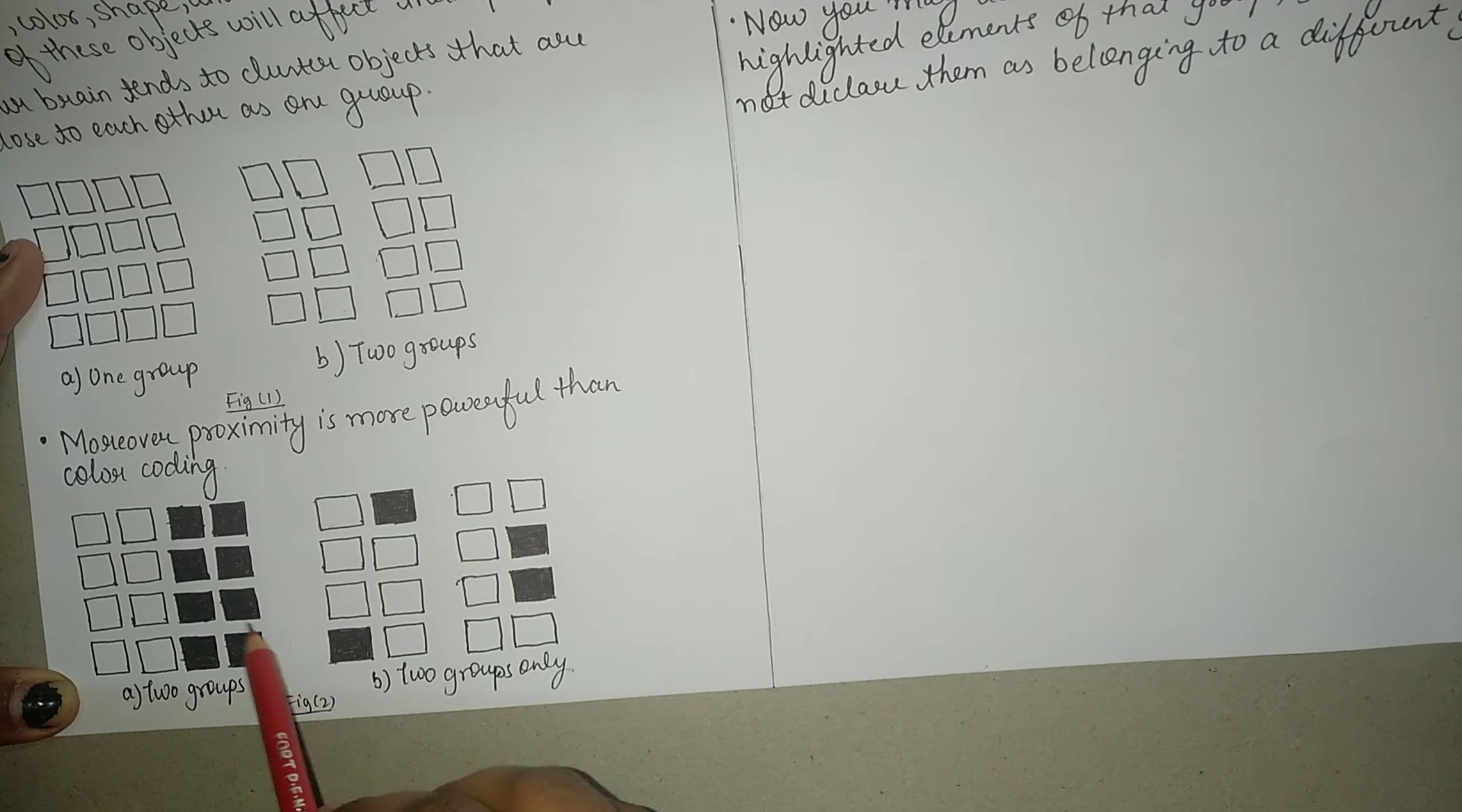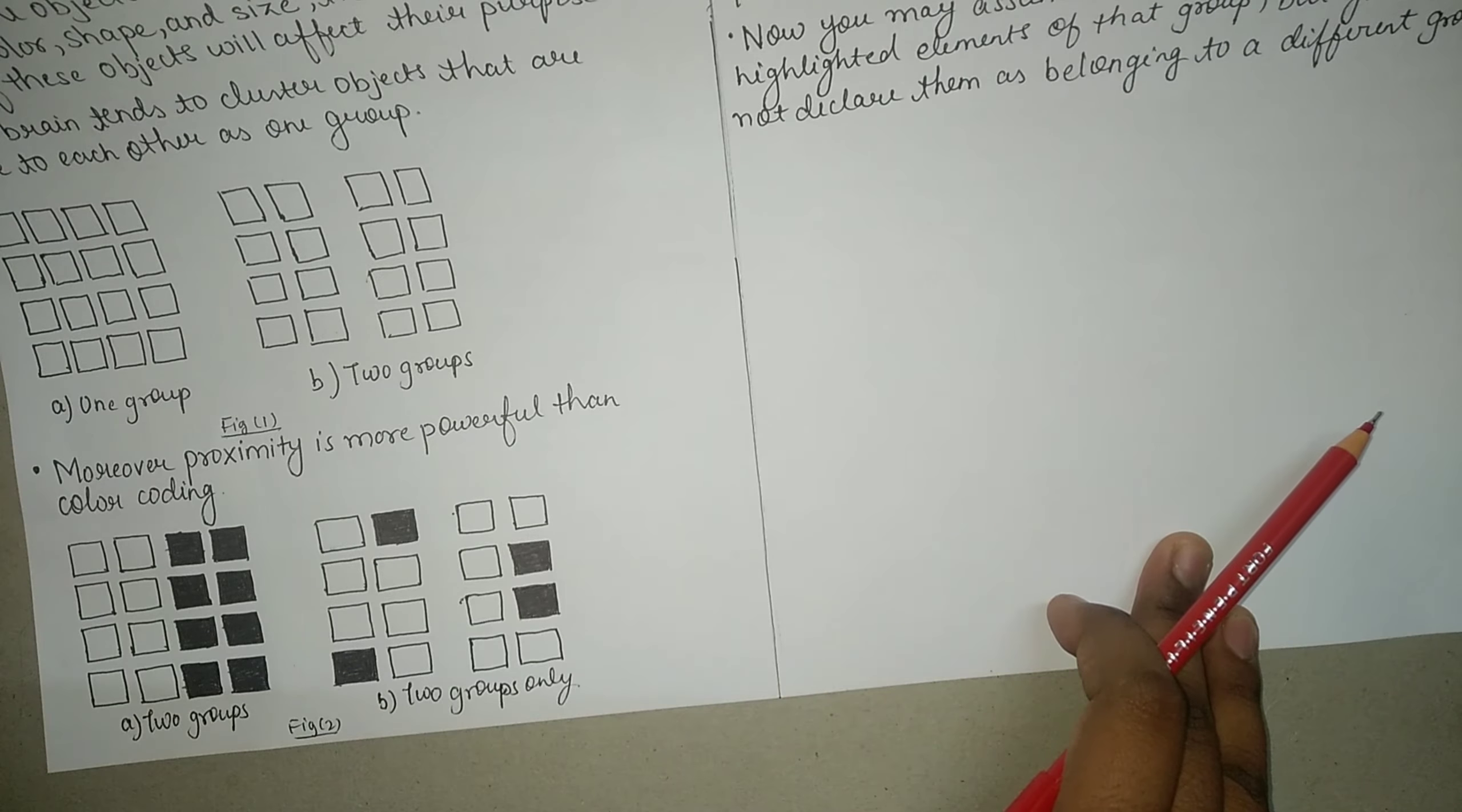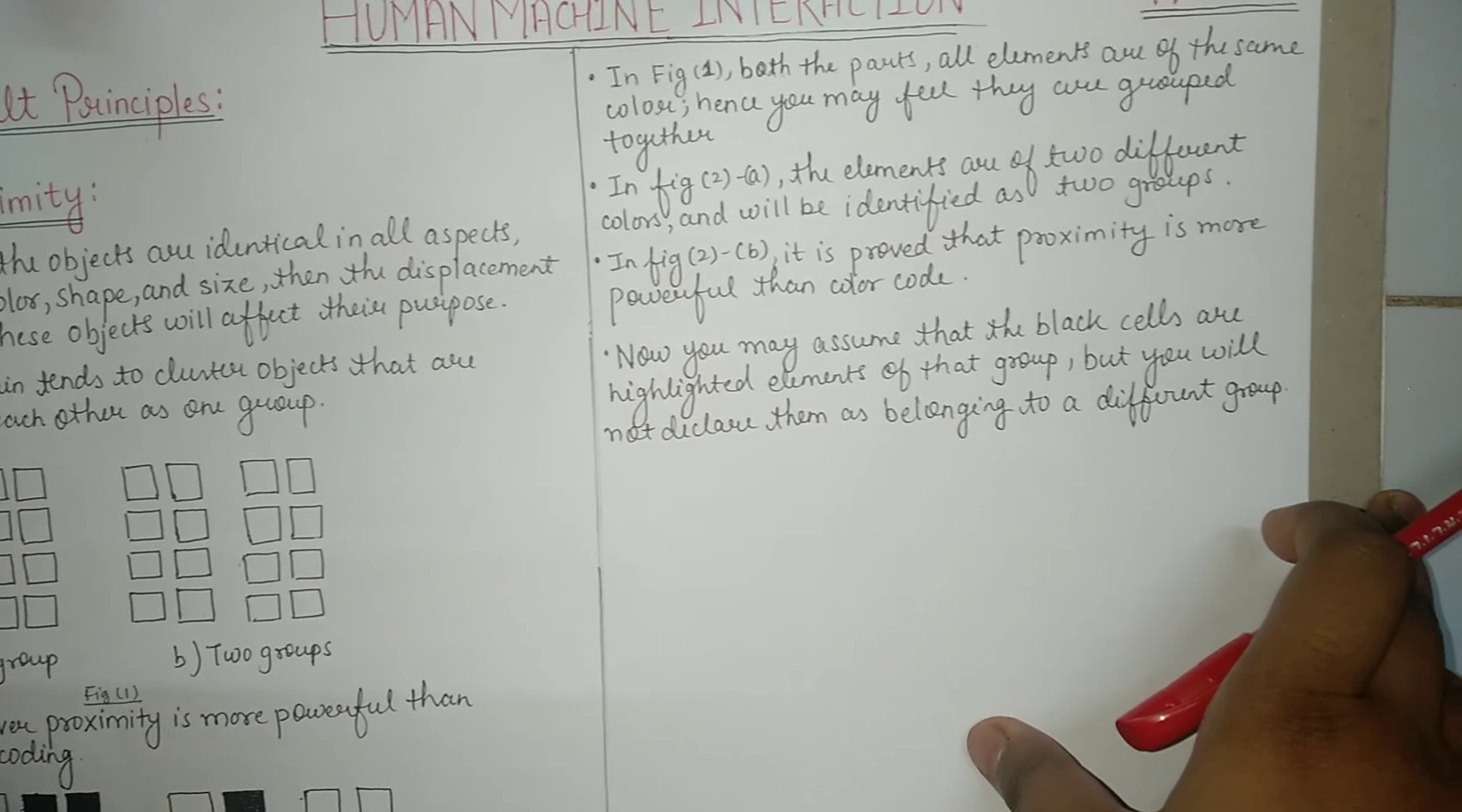In this case, all the boxes were black, all the boxes are white, so that's why this group is a different group and this group is a different group. But in these cases we will not think each group is different because we will assume that one box is highlighted. That's it, the group is one, this is the first group and this is the second group. Other groups are not being formed just because of the color code.